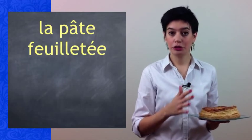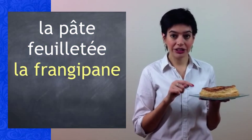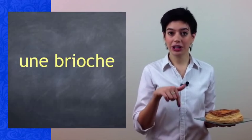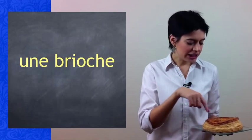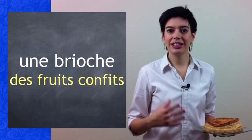La galette des rois is made of pâte feuilletée and frangipane. Frangipane is the inside. La frangipane is made of amandes. In the south of France, the galette is a brioche. It's round like that and it contains fruits confits, candied fruits.